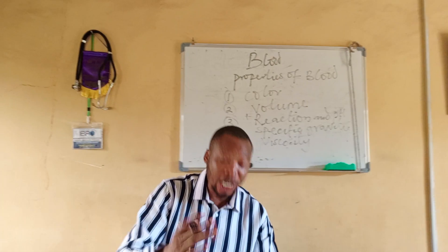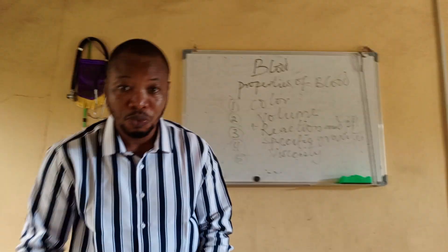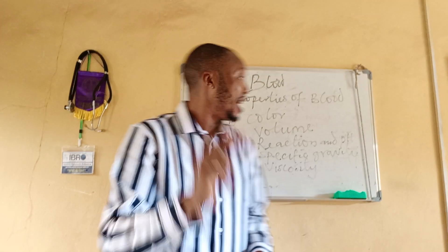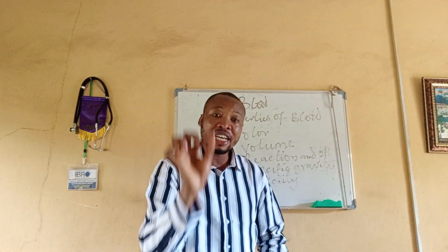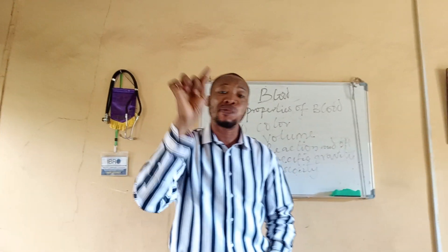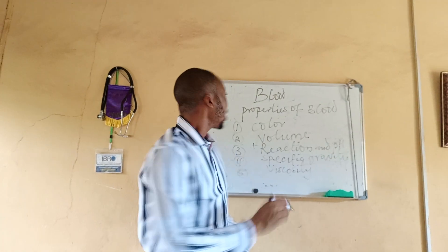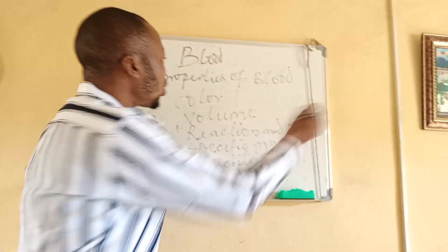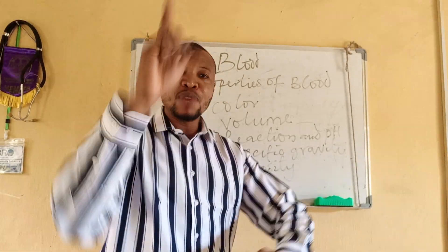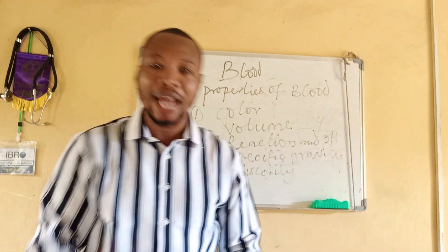That will take us to reaction and pH. Blood is slightly alkaline. The pH of blood is about 7.4. On the indicator scale, which runs from 1 to 14, the neutral point is 7. Blood, being slightly alkaline, has a pH of about 7.4.